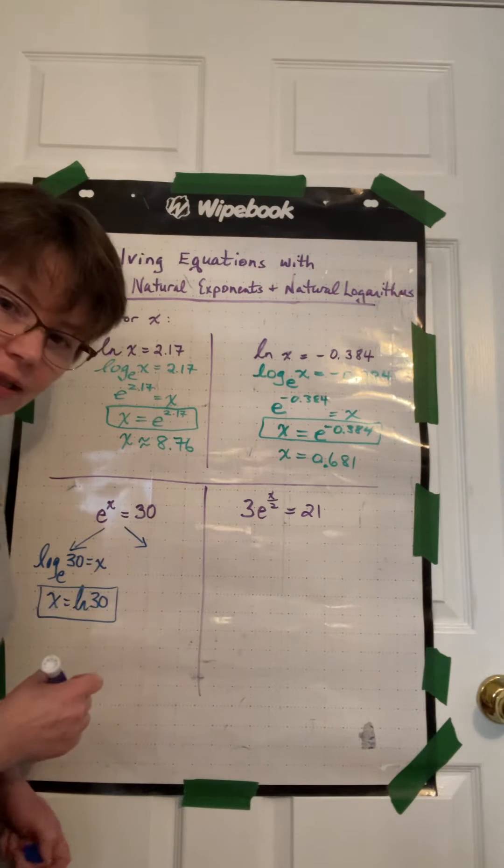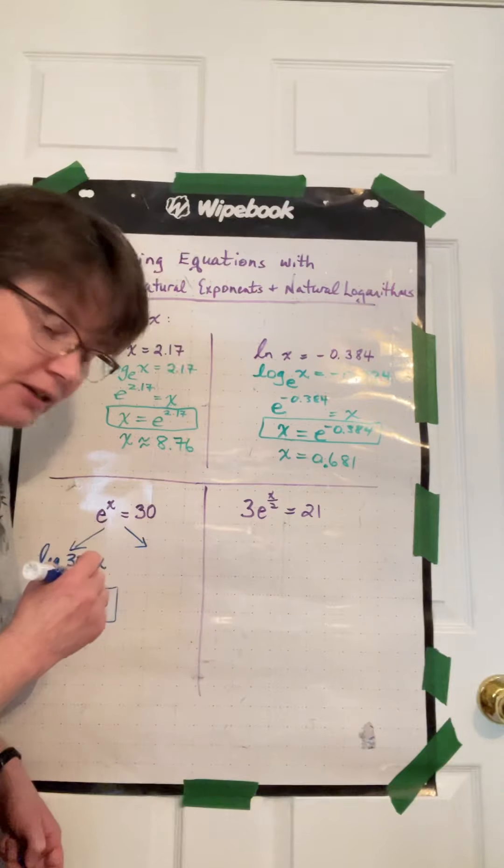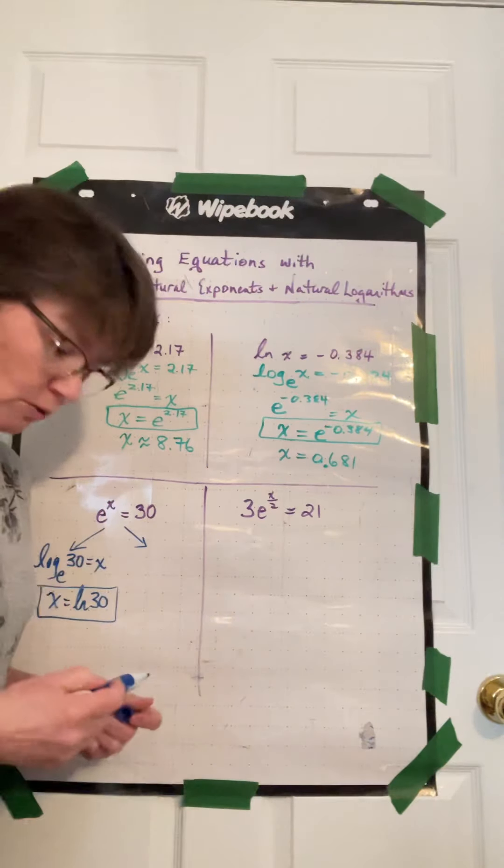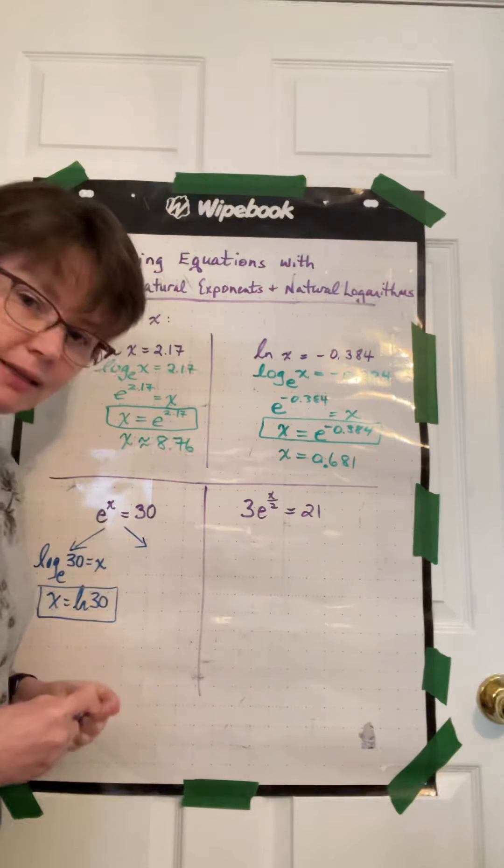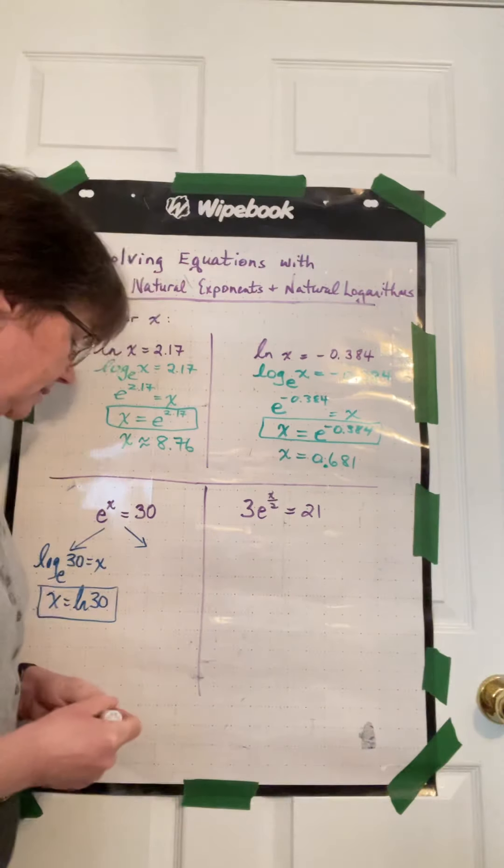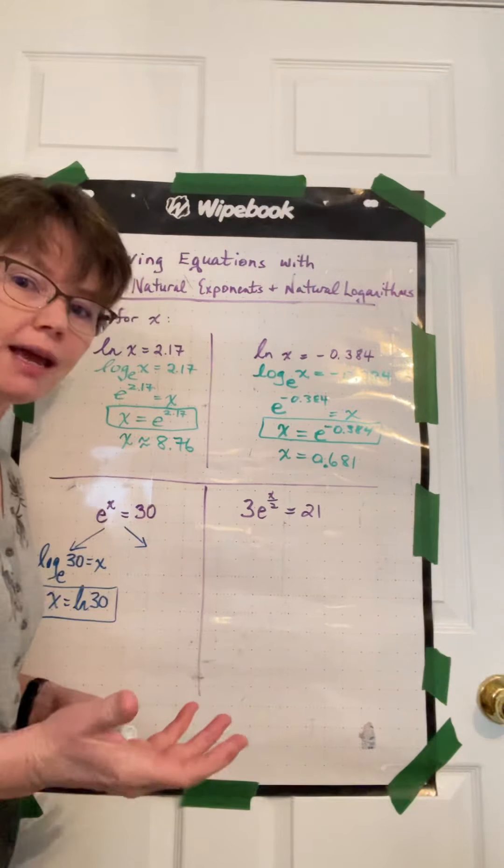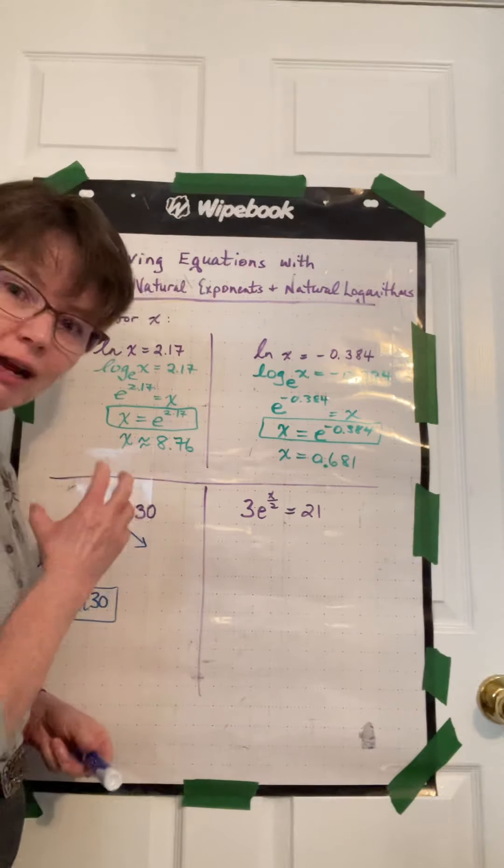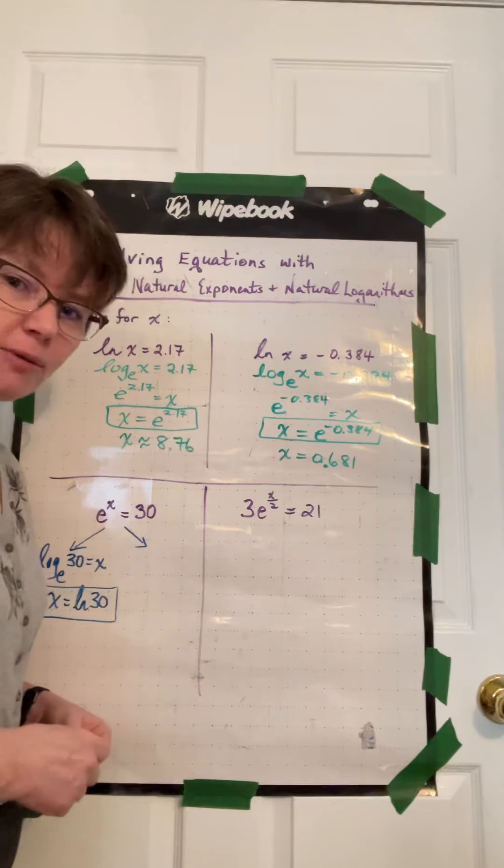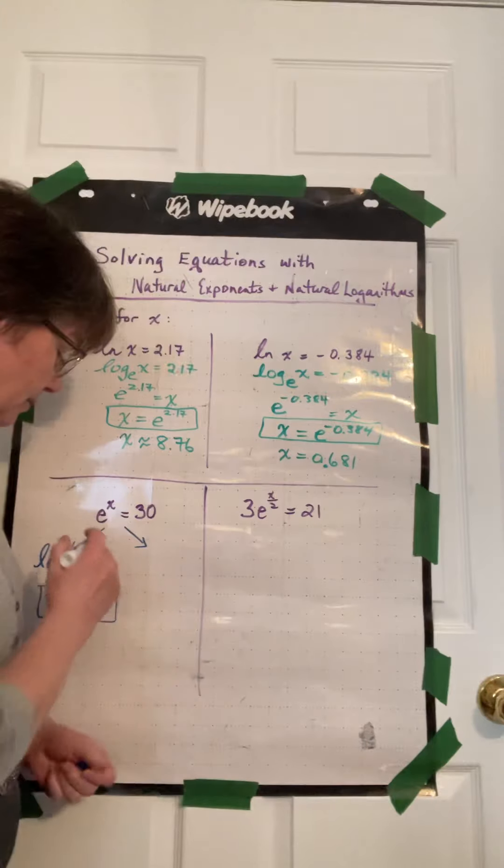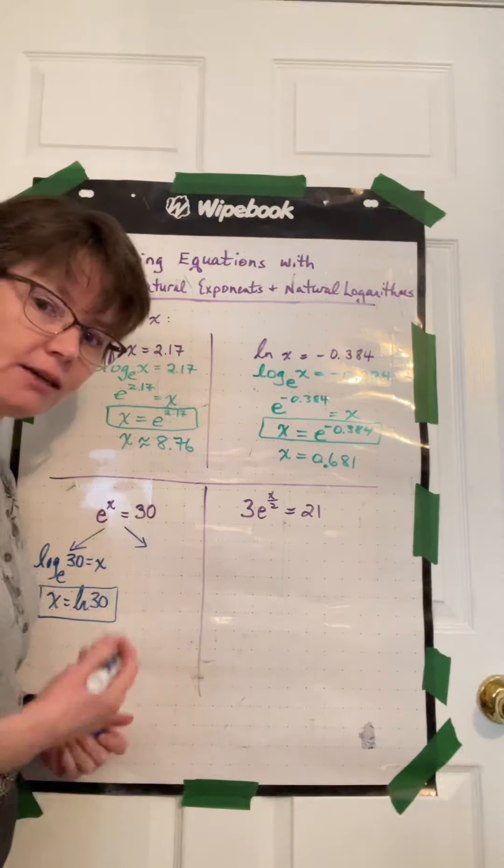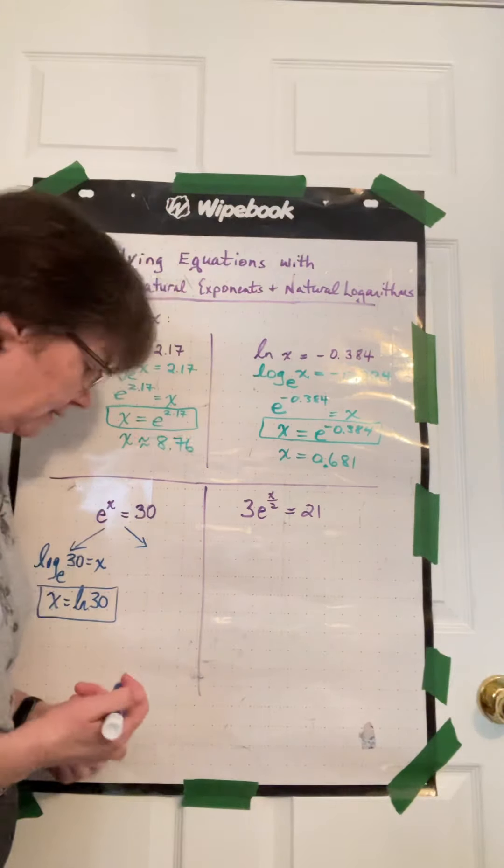Another way of dealing with this is to log both sides of the equation. Before when we solved exponent statements by logging both sides of the equation, we chose log 10 by just writing log, and they automatically were on base 10. Because we have this base here of e, we need to choose log base e this time around.